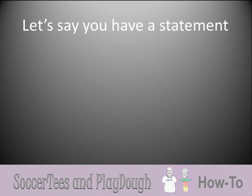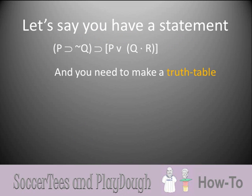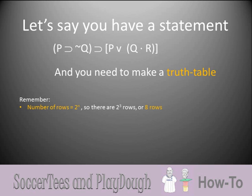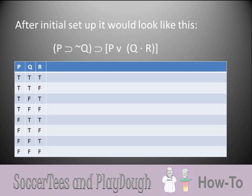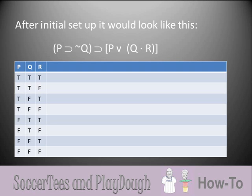So let's say you have a more complex statement like this one: if P then not Q, then either P or Q and R, and you need to make a truth table for it. Remember that the number of rows for the table is given by the formula 2 to the N, where N is the number of statement letters. Since there are 3 statement letters, there are 2 to the 3 rows, or 8 rows. After the initial setup, statement letters P, Q, and R each have their own column, filled in with possible combinations of truth values according to the method from the last episode.